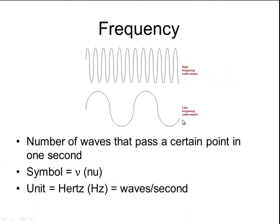The symbol for frequency is a lowercase Greek letter nu, which is actually represented by something that looks like a V. And the unit for frequency is hertz, which is how many waves per second pass by a certain point. You are probably most familiar with the unit of hertz when you're talking about listening to radio stations. Radio stations on the FM dial are always measured in megahertz, like 102.1 megahertz, whereas AM stations are measured in kilohertz, like 1150 kilohertz.